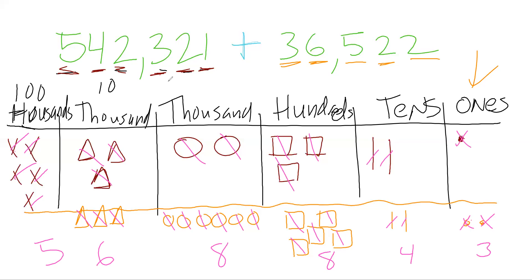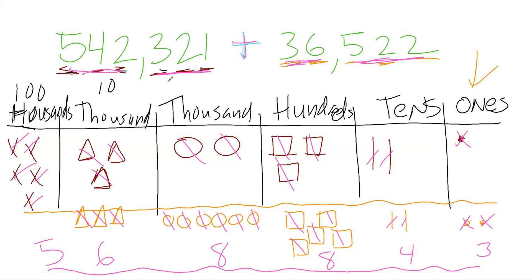So when I take 542,321 and add 36,522, I get a sum of 578,843. The really cool part about this skill is that I can just model them out, count what I have, and get my answer.